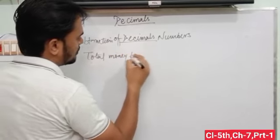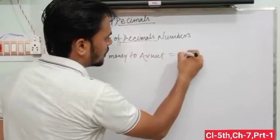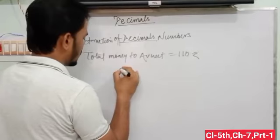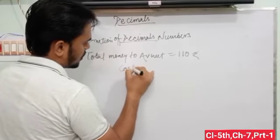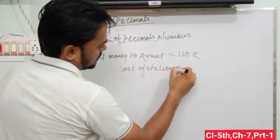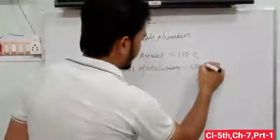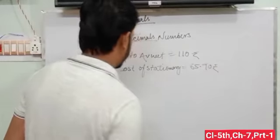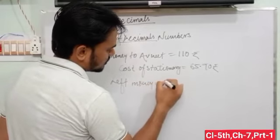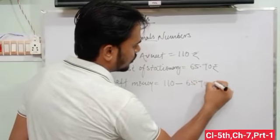You can see here. The total money with Avnith is equal to 110 rupees. The cost of stationery is equal to 65.90 rupees.